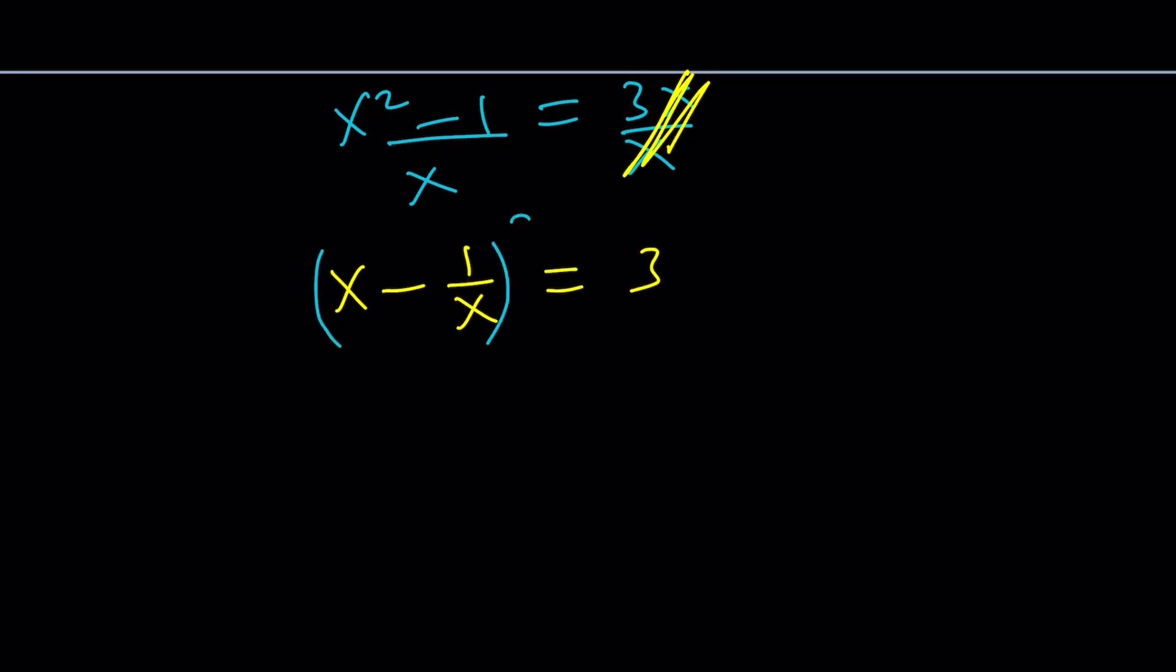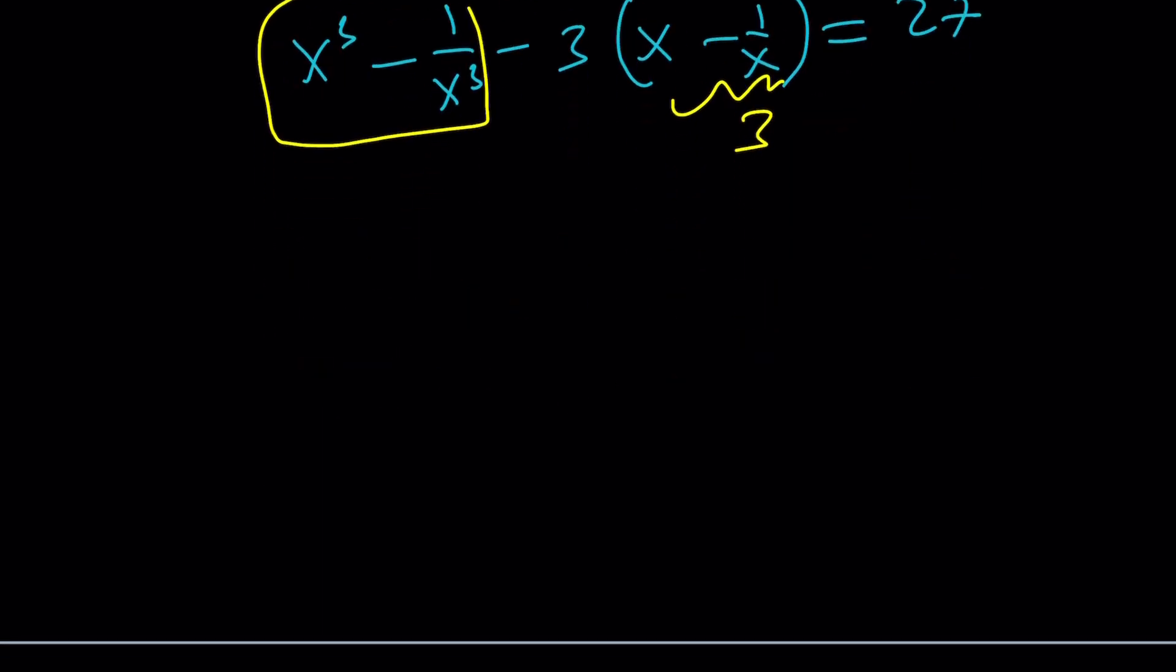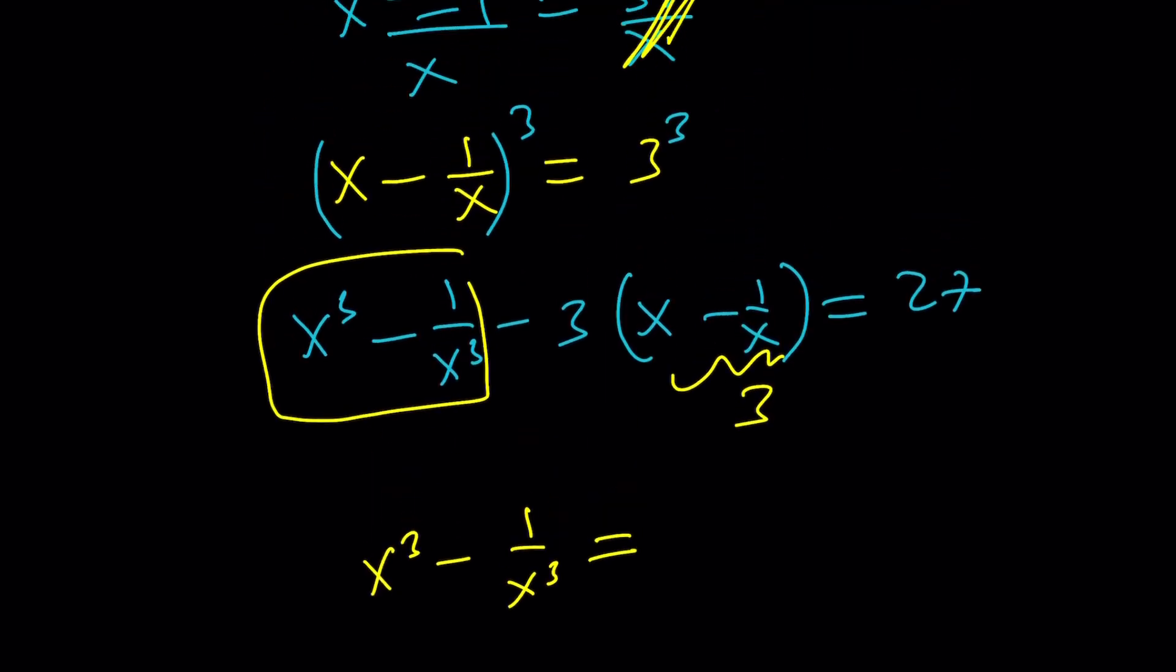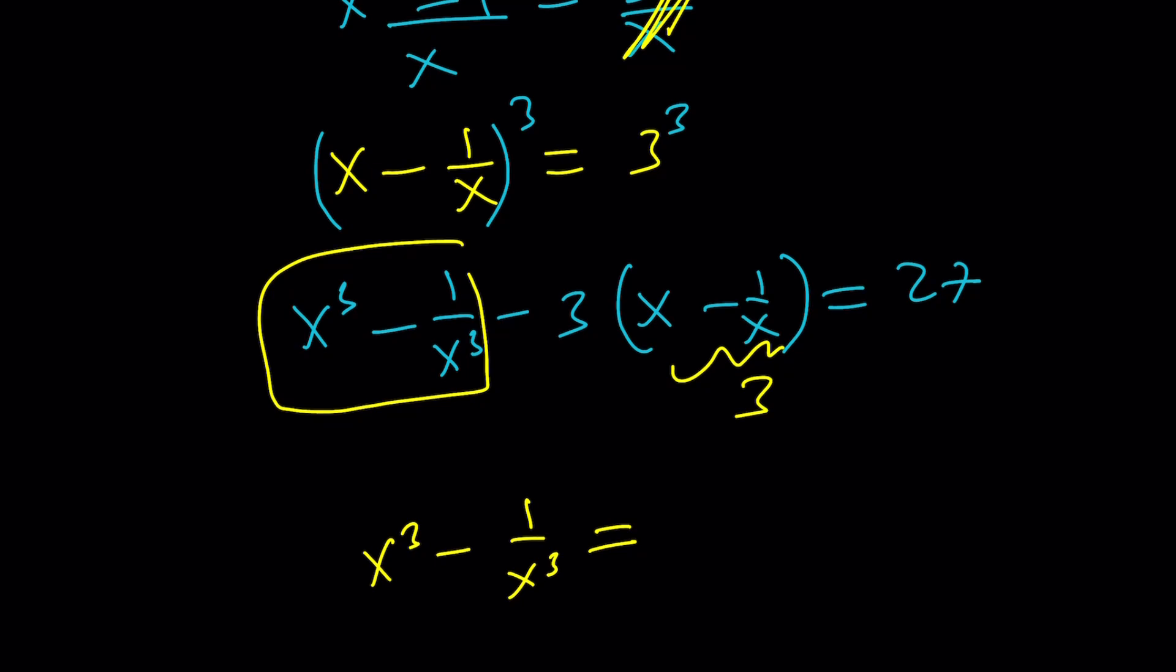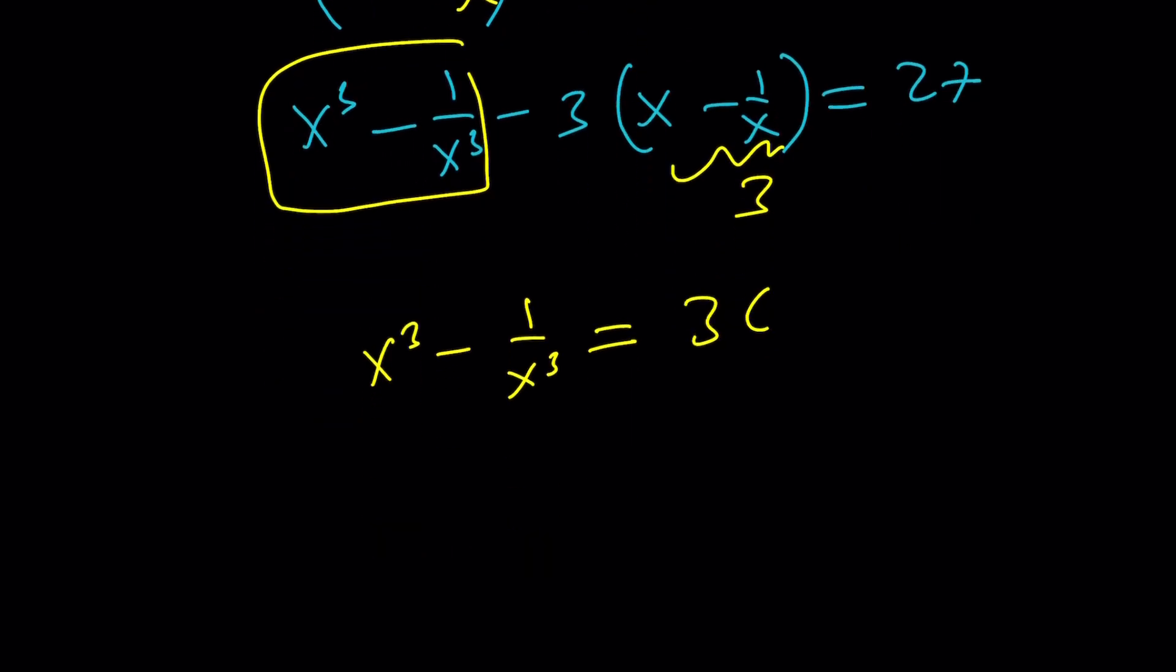And now, I can go ahead and cube both sides. Now, it's going to give me a cubed minus b cubed minus 3ab times a minus b. I'm just using the famous identity. And my goal is to evaluate this expression right here. But I do know that this is equal to 3. 3 times 3 is 9. And from here, x cubed minus 1 over x cubed is supposed to equal... I mean, did I say 18? 3 times 3 is 9. 27 plus 9 is 36. As before, we get the exact same answer.